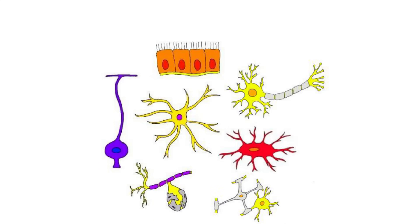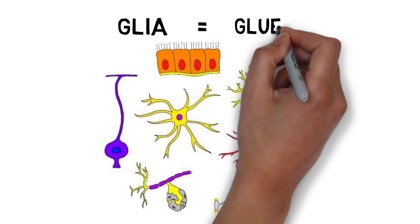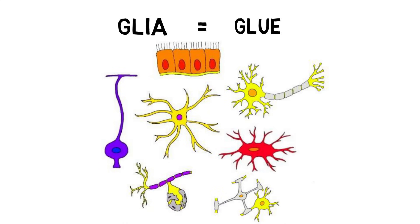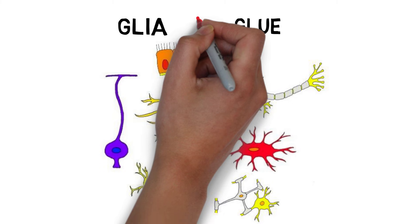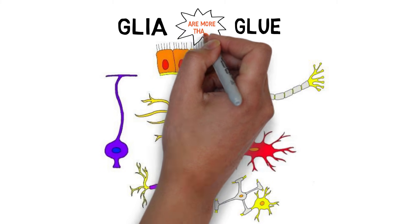Glia is Greek for glue, and glial cells got this name because they were thought to simply hold neurons in place. We now know, however, that glia have many other functions.